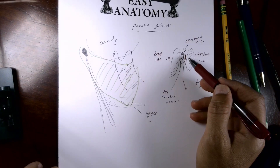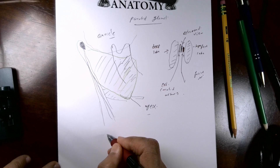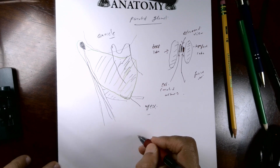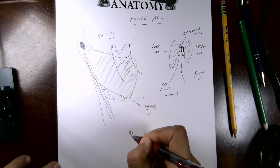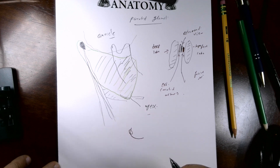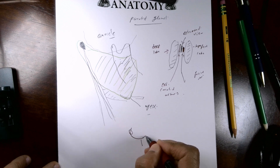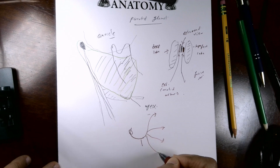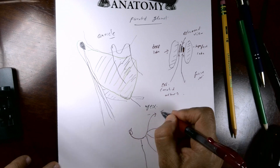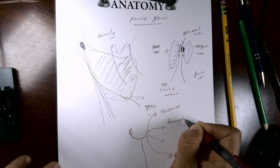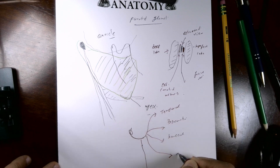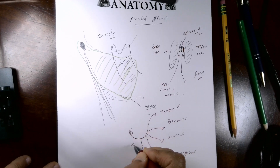The unique relation of the facial nerve to the gland: it exits the stylomastoid foramen and penetrates the posteromedial surface of the gland, then splits inside into five terminal divisions: temporal, zygomatic, buccal, marginal mandibular, and cervical.